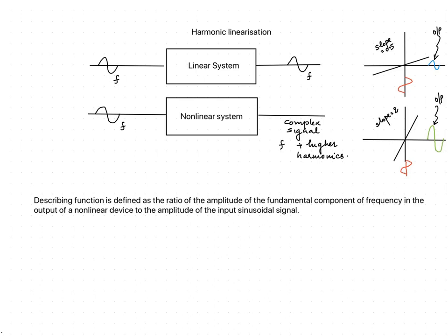In short, for a linear system, if a sinusoidal signal of frequency f is given as the input, the output will be a sinusoidal signal of frequency f. The slope is a major factor in determining the output. Here in the figure, two different slope conditions are given — one slope equal to 0.5 and another equal to 2. In the first case, the output sinusoid will have a smaller magnitude, whereas in the second case it will have a larger magnitude.